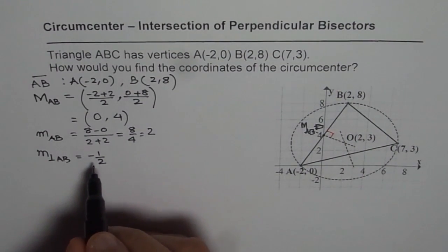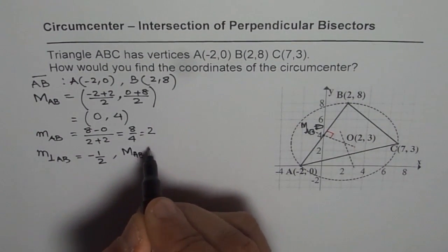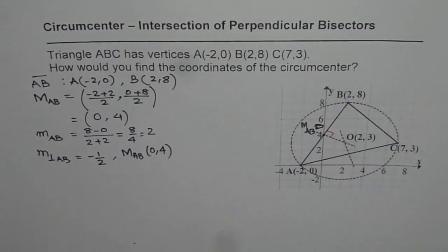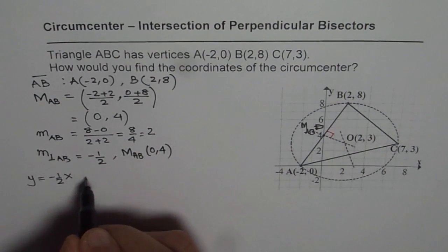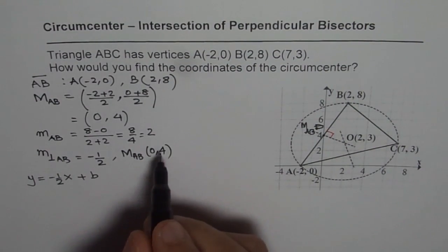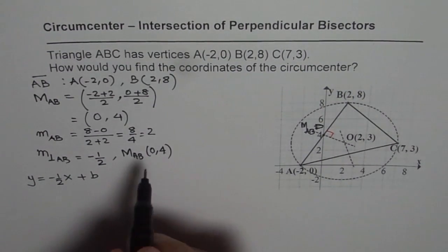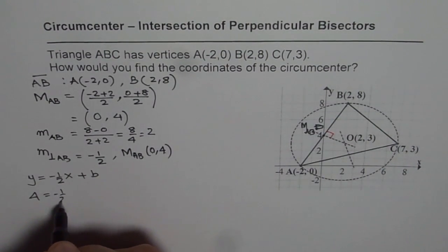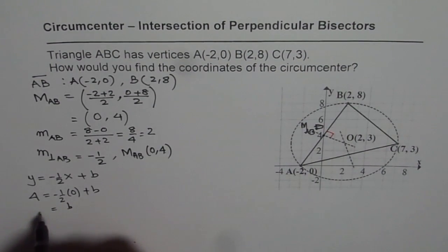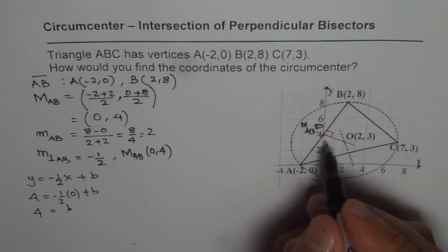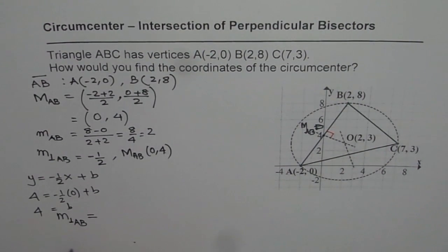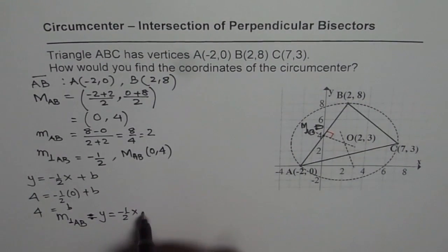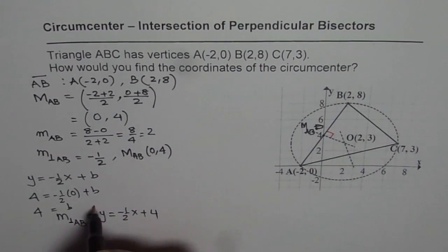The perpendicular bisector passes through the midpoint M(AB) = (0, 4), so we use slope-intercept form: y = −(1/2)x + B. Substituting x = 0 and y = 4: 4 = −(1/2)(0) + B, so B = 4. Therefore the equation of the perpendicular bisector of AB is y = −(1/2)x + 4. That's our first equation.